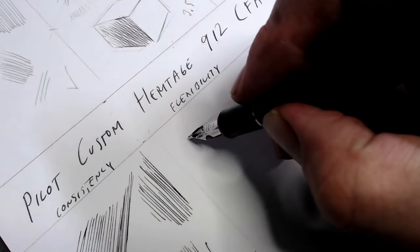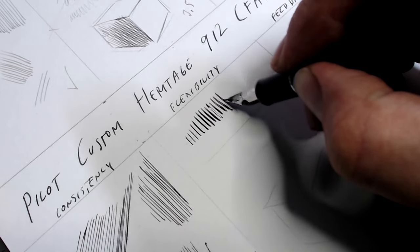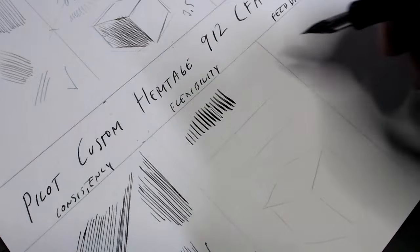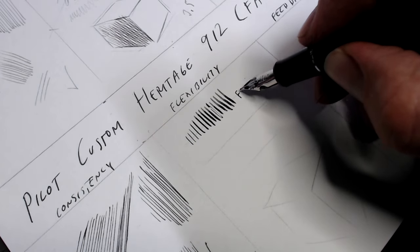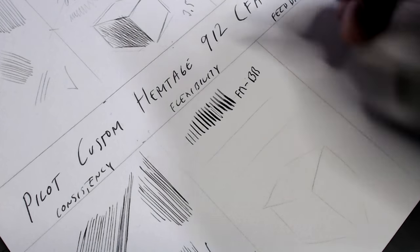In the line variation test is where this pen really shows itself as one of the best out-of-the-box modern flex pens, going from a fine line to a double broad. You do have to slow down your stroke slightly to prevent the pen from railroading, but really, in most cases, the pen performs perfectly.